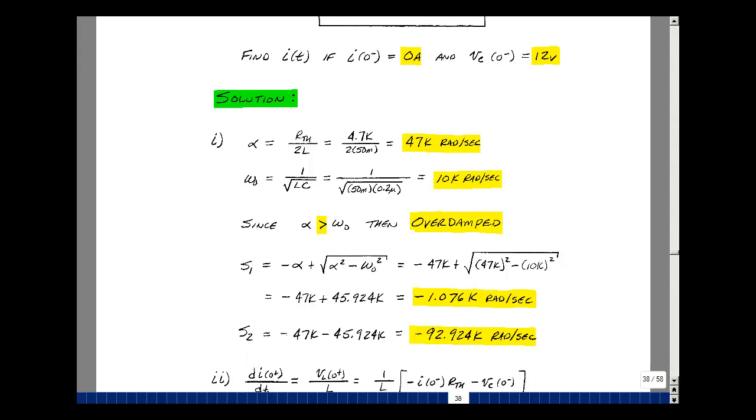Now we can calculate S1 and S2. Going back to page 35, S1 is minus alpha plus the square root of alpha squared minus omega-0 squared. Alpha is 47,000 and omega-0 is 10,000. That turns out to be minus 1.076 kiloradians per second. S2 would have an opposite sign here and turns out to be minus 92.924 kiloradians per second.